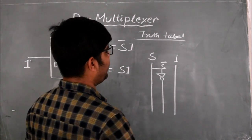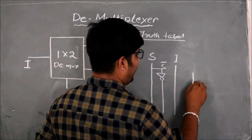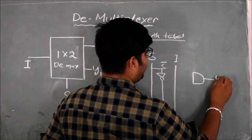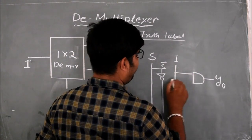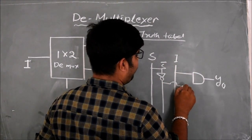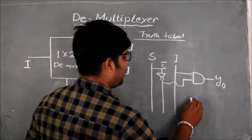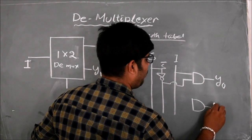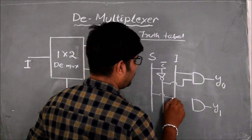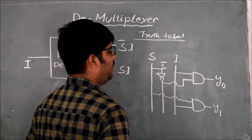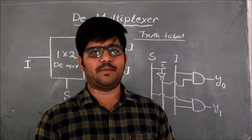If I want to design Y0, Y0 is equal to S-complement times I. So I take an AND gate with output Y0, with inputs S-complement and I. And Y1 is equal to S times I, so another AND gate is used to create Y1 with inputs S and I. This is the internal circuit diagram of a 1x2 demultiplexer.